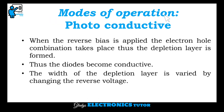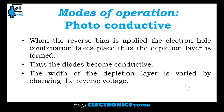Modes of operation. First is photoconductive mode. When the reverse bias is applied, the electron hole combination takes place. Thus, the depletion layer is formed and the diode becomes conductive. The width of the depletion layer is varied by changing the reverse voltage.